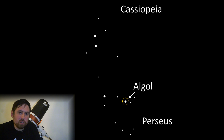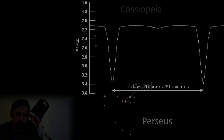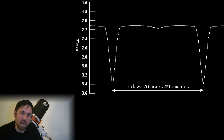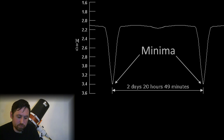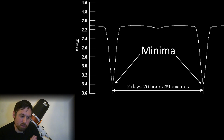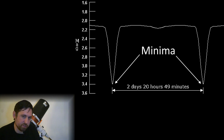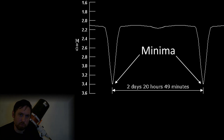Well, what can you see? Algol is one of those astronomical targets that need to be observed over an extended period of time. The whole process from Maxima, which is the brightest point, to Minima, which is the dimmest point, and back again will take about 10 hours. However, there is a noticeable difference in brightness from two hours before or after the Minima, so if you've got a short amount of observing time you can compare the difference in brightness from two hours before or after that point.